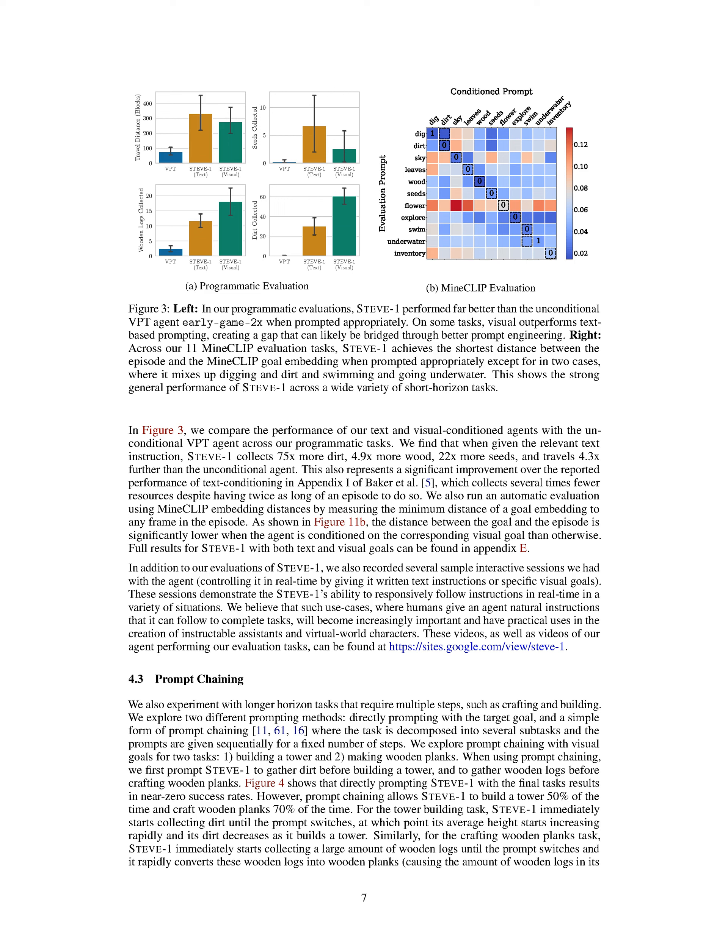For the tower building task, the agent starts by collecting dirt until the instruction changes, at which point it begins to build the tower rapidly using the collected dirt. Similarly, for crafting wooden planks, the agent starts by collecting a large number of wooden logs, and once the instruction changes, it quickly transforms these logs into wooden planks, reducing the number of logs and increasing the number of planks in its inventory.